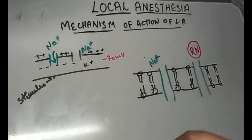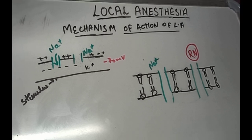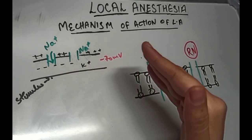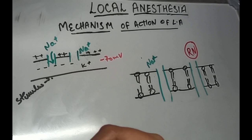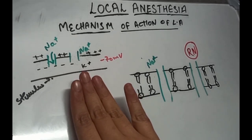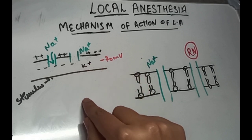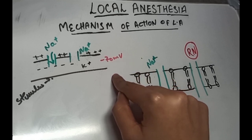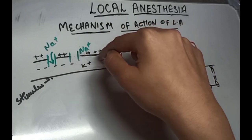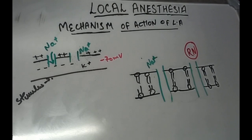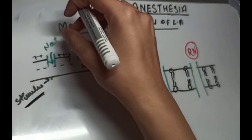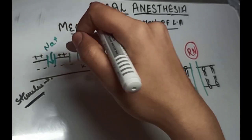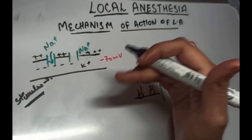Having discussed the theories, let's look at the actual mechanism of action of LA. LA acts by blocking nerve conduction. Before understanding conduction blockade, we need a basic idea of how the nerve actually conducts. In a resting membrane potential, the nerve possesses a resting potential of minus 70 millivolts across the nerve membrane — the interior is relatively more negative than the exterior. When a stimulus excites the nerve, there is an initial slow depolarization with an influx of sodium ions through the sodium channels.